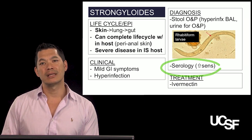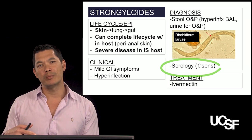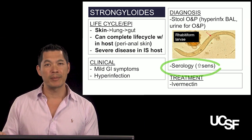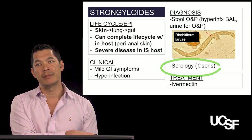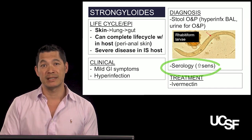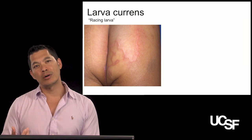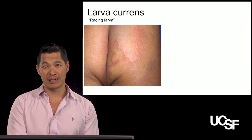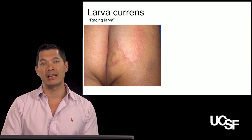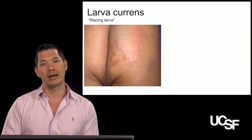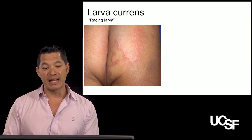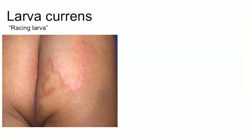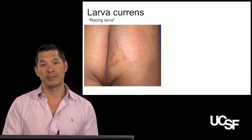You treat with ivermectin. This is one of the main parasites we see often because of our large immunocompromised population, where people may have been exposed some time ago if they were born in another part of the world. The skin rash strongyloides causes is called larva currens — Latin for racing or running larva. This is different from cutaneous larva migrans associated with dog hookworm; larva currens moves a little faster. When you see strongyloides in the skin in immunocompromised patients, if you biopsy the rash, you'd see the worm inside.